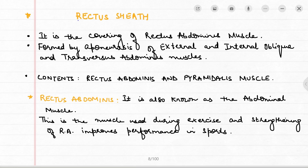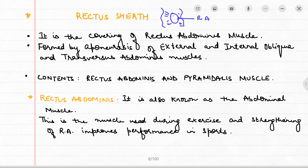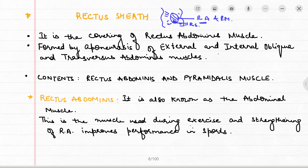The rectus sheath is basically a covering of the rectus abdominis muscle. It is formed by the aponeurosis of the internal and external oblique and the transversus abdominis muscle. The contents of the rectus sheath are the rectus abdominis and sometimes the small fifth muscle, the pyramidalis.